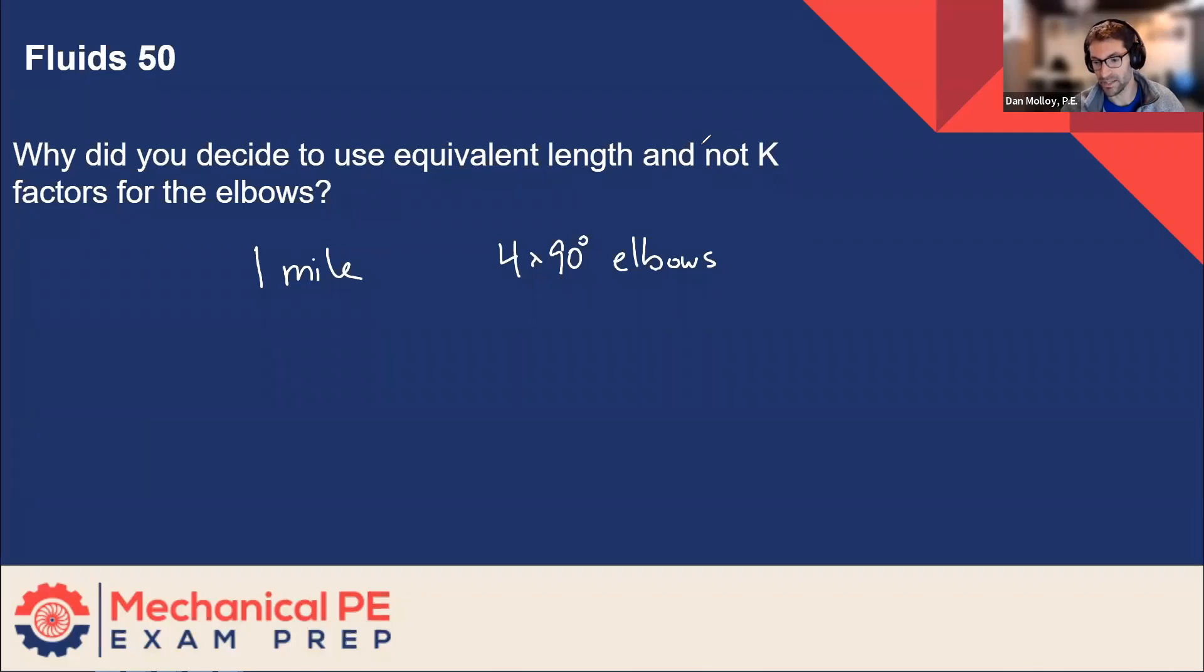I did a rough calculation and the minor loss is about two percent of the total losses. But that's a non-answer because your question is why do the equivalent length and not the K factors.